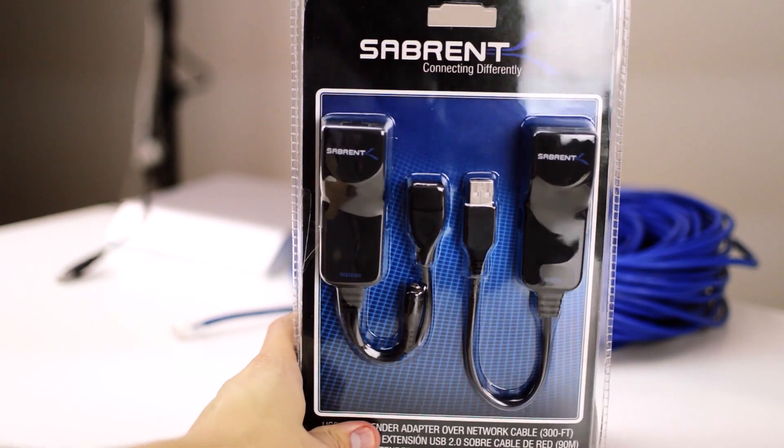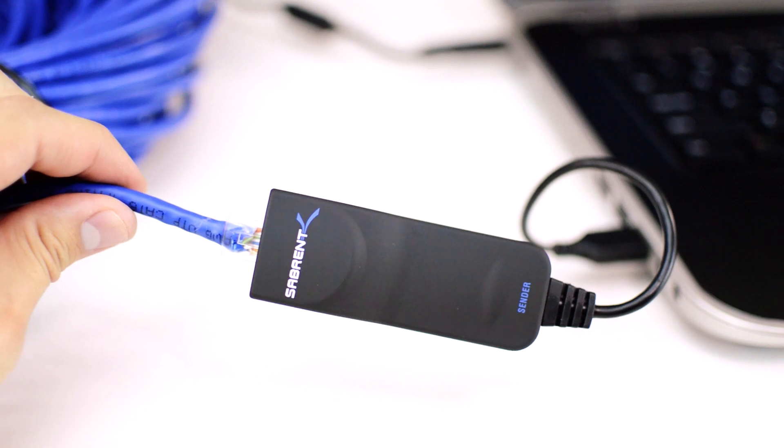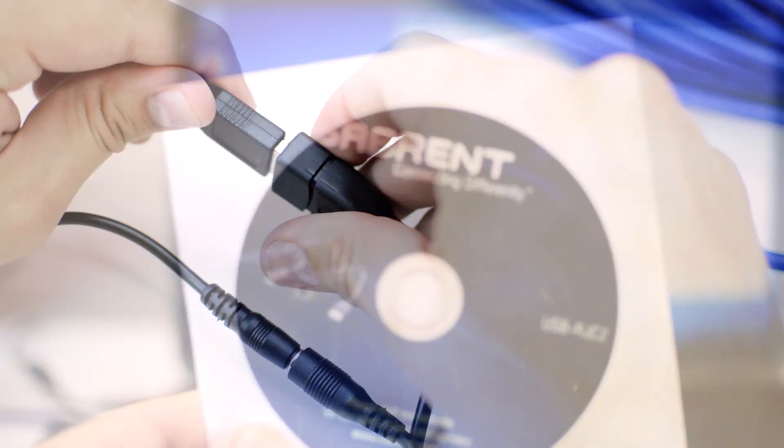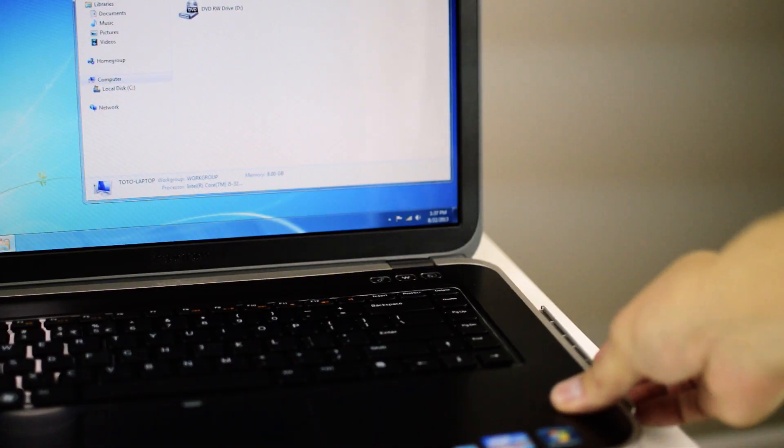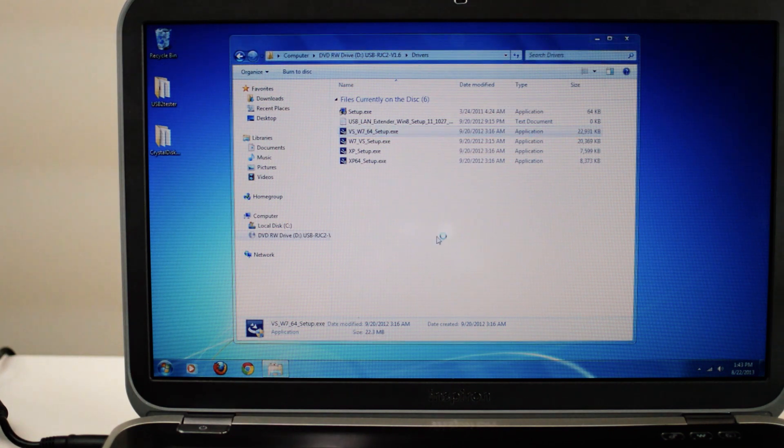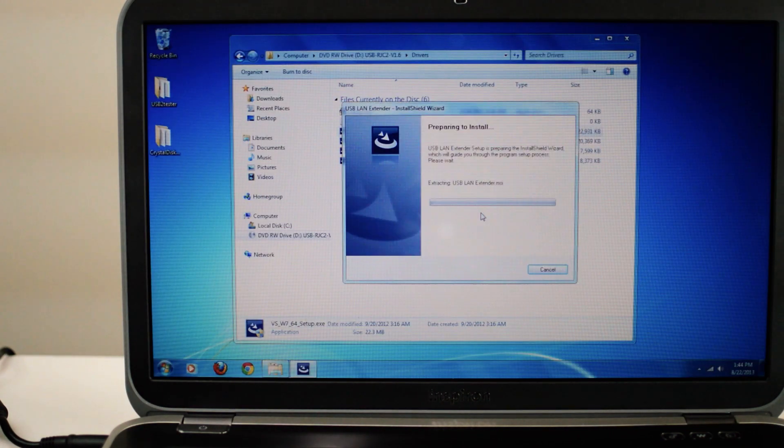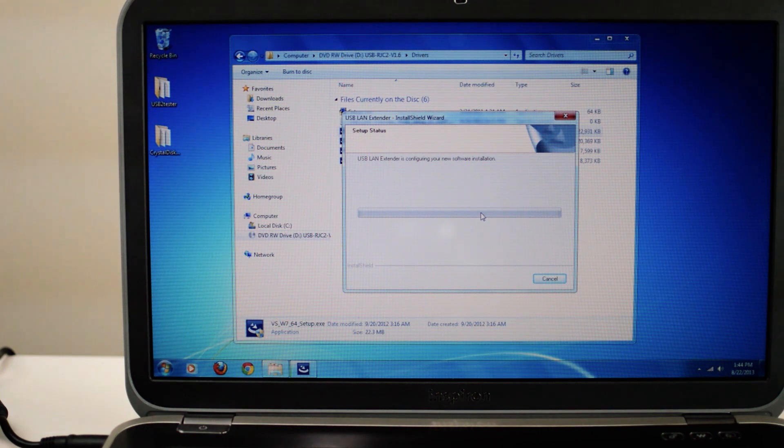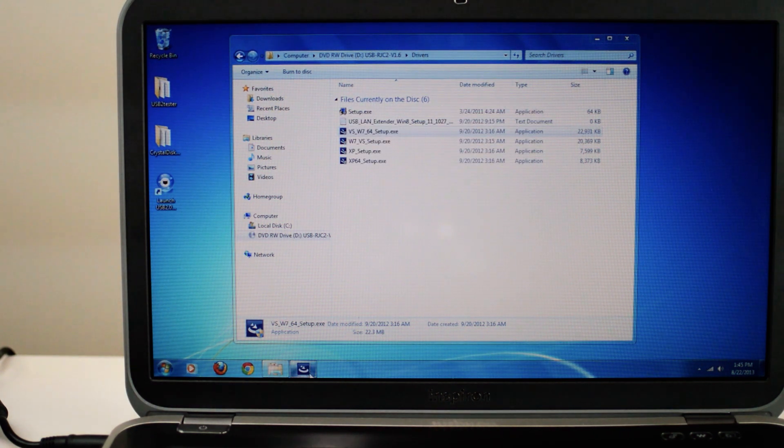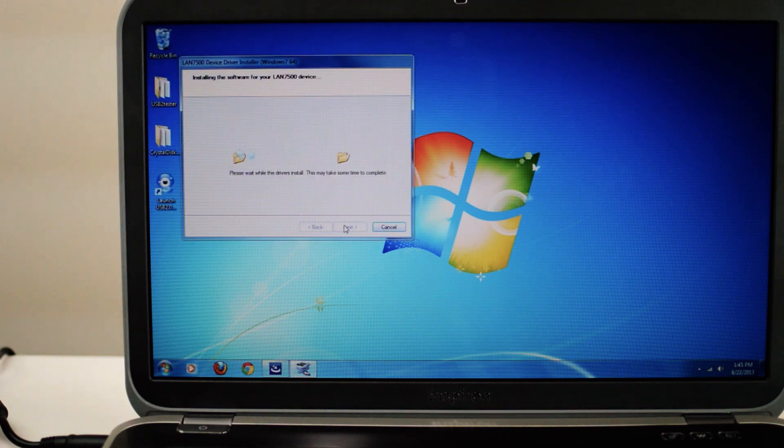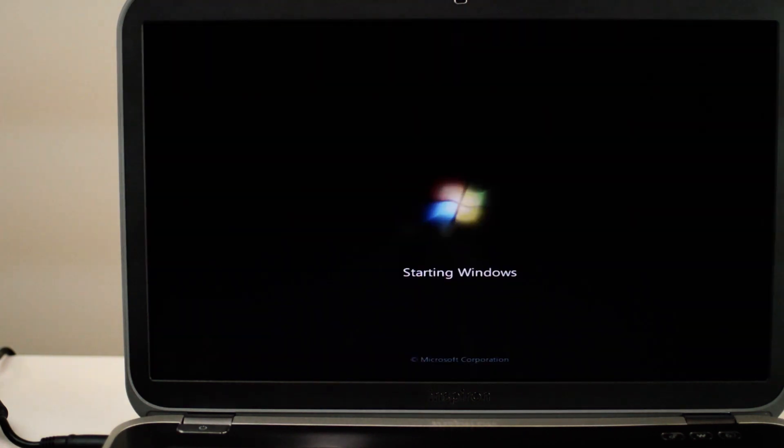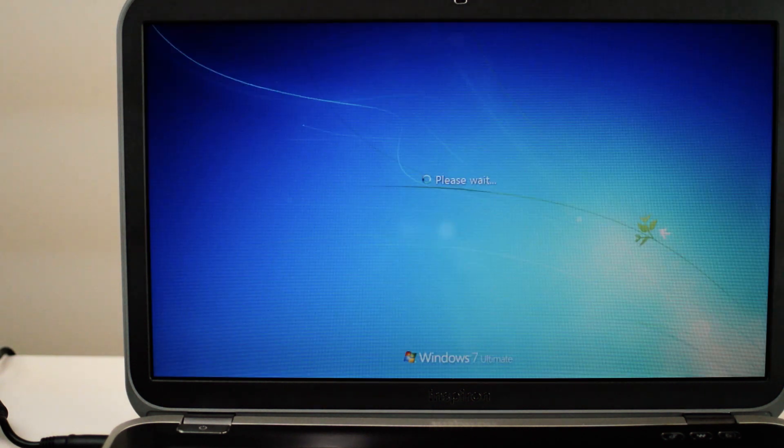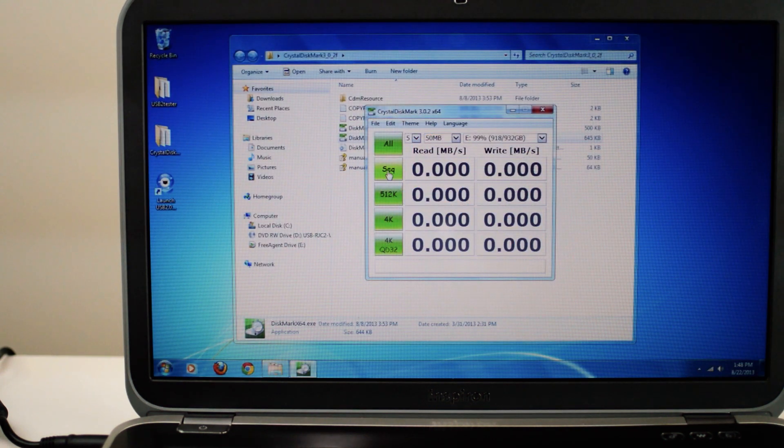Now we will test the Sabrent USB 2.0 extender. So once everything is plugged in, we wait while we install the required drivers, which are only compatible with Windows and not Mac. And once everything is installed, we run Crystal Disk Mark and wait for the test to finish.